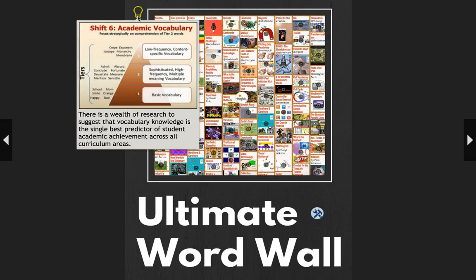This ultimate word wall was an attempt to show a great way to support the common core academic shift number six, which is all about vocabulary. It talks about how vocabulary knowledge is the single best predictor of student academic achievement across all curriculum areas. The common core has us digging deeper and breaking down vocabulary into three tiers: basic vocabulary, sophisticated high frequency vocabulary, and low frequency content-specific vocabulary words. These tier three words are the types you see in bold print in a textbook — they work really well for this basic introduction to ThingLink where you can create a vocabulary activity.